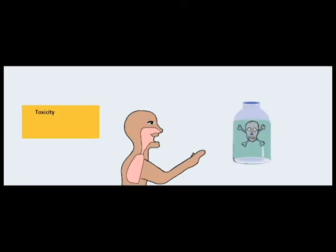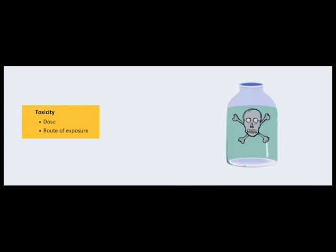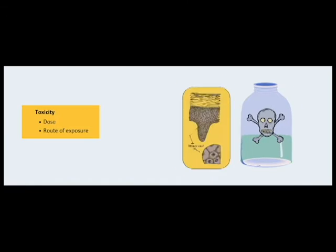The toxicity of a chemical varies depending upon the dose and route of exposure. Exposure routes include inhalation, ingestion, absorption, and injection. Toxicity is usually described in terms of potency—how much agent is required to produce a toxic effect. The lower the dose that produces an effect, the more potent the agent. Toxicity is also defined by a chemical's mechanism of action, or the specific toxic effect on cells and tissues.